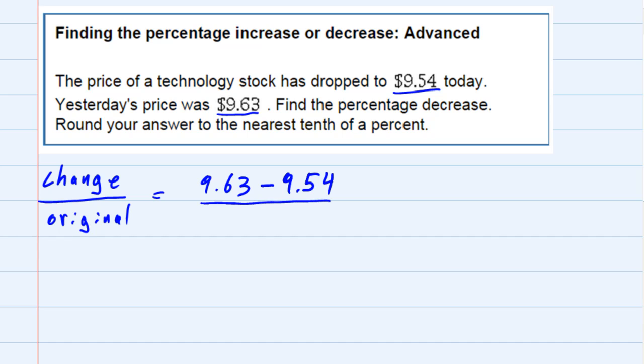That's going to be the top of our fraction. And then in the bottom, the original, we have to be a little bit careful here because they gave us the price today and they gave us yesterday's price. So the original in this case is actually going to be yesterday's price of $9.63.